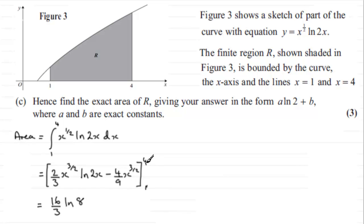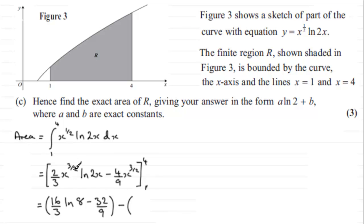Moving to the second term, substituting x = 4: again 4 to the power 3/2 gives square root of 4 which is 2, cube it which is 8, then multiply by 4/9 to get minus 32/9. Now putting x = 1 through: 1 to the power 3/2 is just 1, multiplied by minus 4/9 gives minus 4/9.